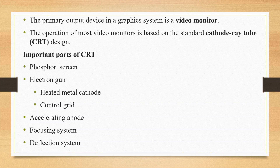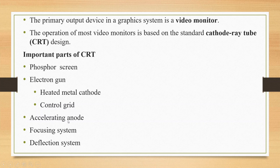This is the display monitor and this is the glass. Next is the Electron Gun, which is the most important part. The Electron Gun consists of a heated metal cathode and a control grid. Next is the Accelerating Anode, followed by the Focusing System and the Deflection System.